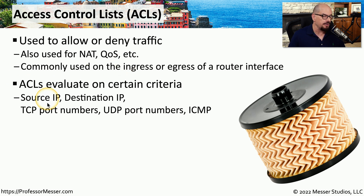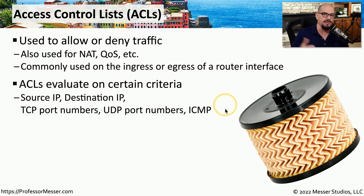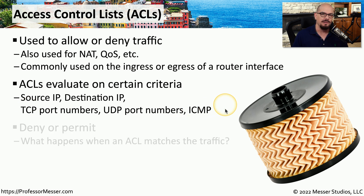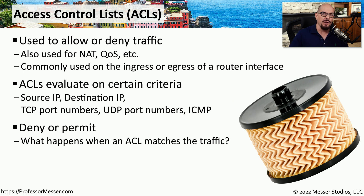If you were to look at an ACL on a router, you would see a number of different criteria that we can use to filter traffic. We could use a source IP address, destination IP address, TCP port number, UDP port number, or ICMP or other type of protocol. Traffic going through the router will go through this list to see if any of it matches an existing access control list, and then we can look at the disposition of this ACL to determine whether the traffic should be allowed through the router or dropped.